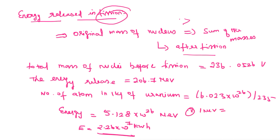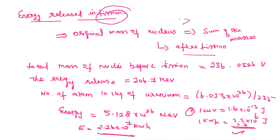1 mega electron volt — what is that value? 1 kilo watt hour — what is the value? 1 mega electron volt can be written as 1.6 into 10 power minus 13 joule. 1 kilo watt hour is 3.3 into 10 power 6 joule. May be 3.3 or 3.6 — both values we have to consider.